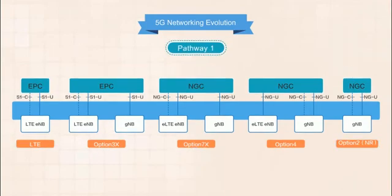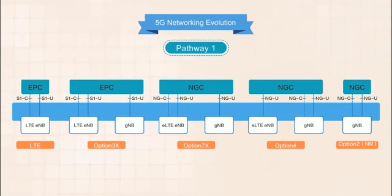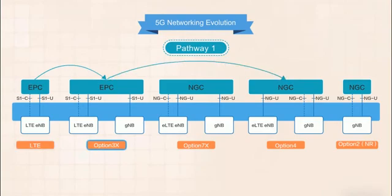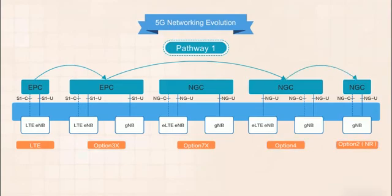In Route 1, on the top, we start with the LTE architecture and then move onto Option 3X. From Option 3X, we can jump directly to Option 4, and then finally to Option 2. This pathway bypasses the Option 7X solution and is for operators with good NR coverage.